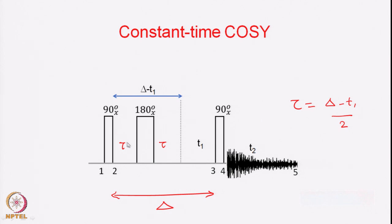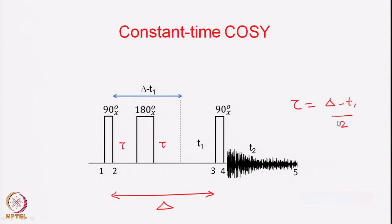The signal will decay and the transverse magnetization will decay during the constant delta period. In this experiment we select the single quantum coherence — similar to COSY but with a 180-degree pulse creating the spin echo. The period from here to here is constant, delta, and that limits how many increments you can have. The maximum value of T1 is limited by the total delta period, which will have an implication for the resolution along the F1 axis because the resolution depends upon the acquisition time in the T1 dimension.